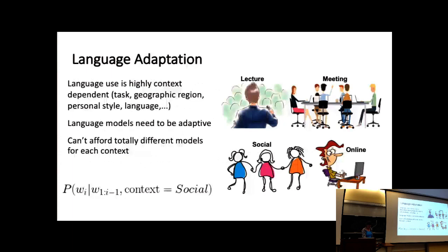What I'm particularly interested in is language adaptation. Language use is highly context dependent — the words that we choose to say depend on the task you're trying to accomplish, where you are geographically, your style, what language you speak. The point of this talk is that language models need to be adaptive to all these different contexts. The current operating mode is you build a language model for the domain you want, and when you go to another domain you build a new language model — and that doesn't scale.